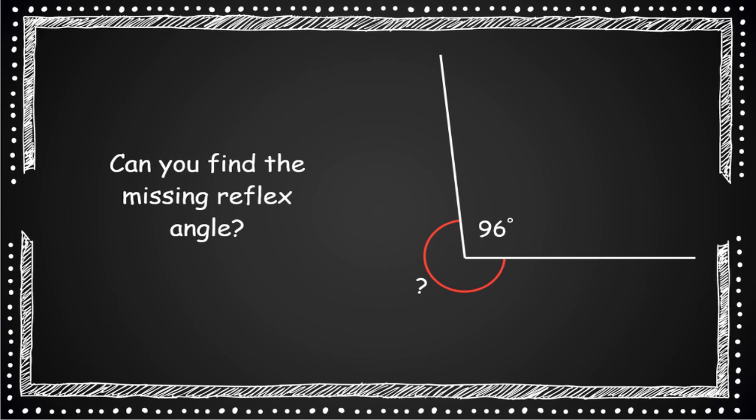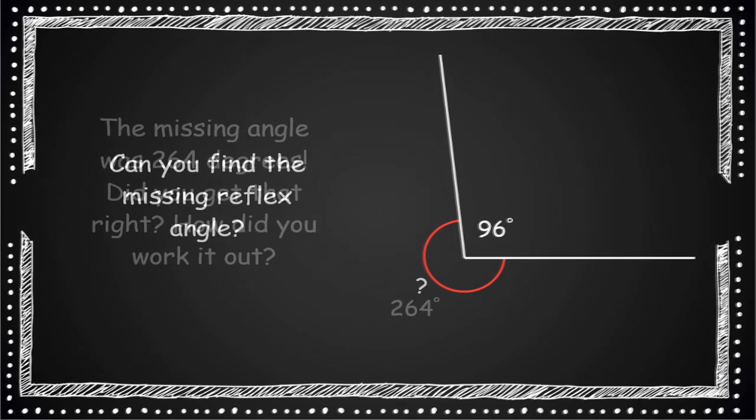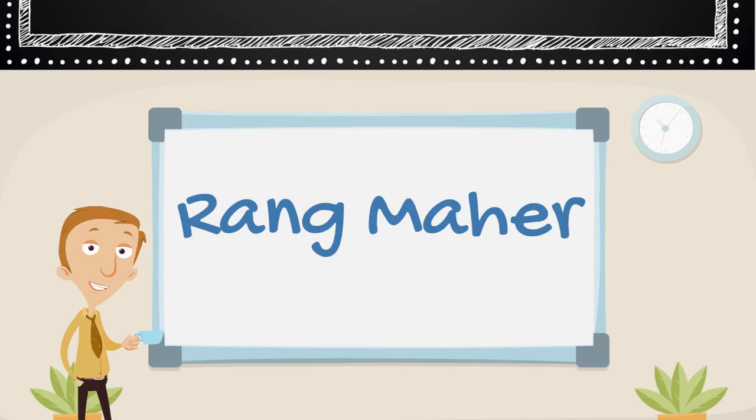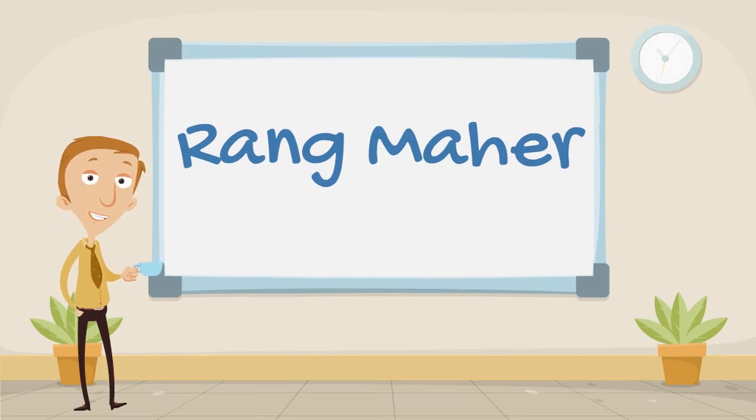Let's finish off with two reflex angle questions. Have a look at this angle and see if you can figure out what the missing reflex angle is. Pause the video and write down an answer. The missing angle was 264 degrees. Did you get that? Hopefully you're able to explain how you got it as well.